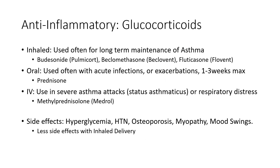So again, anti-inflammatories, glucocorticoids — inhaled, used often for long-term maintenance in asthma: budesonide or Pulmicort. Think 'cort' for corticosteroids. Beclomethasone or Beclovent, fluticasone. Our suffix for this is often '-sone,' so if you remember '-sone,' think glucocorticoids or cortisone.